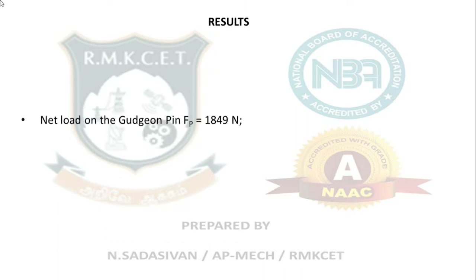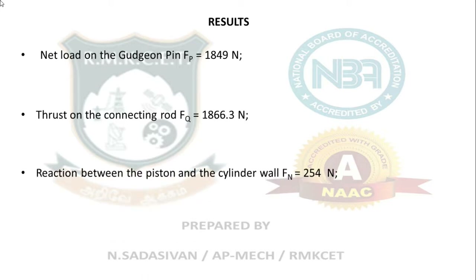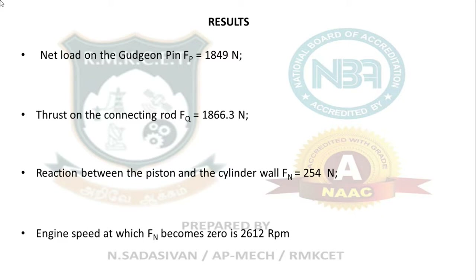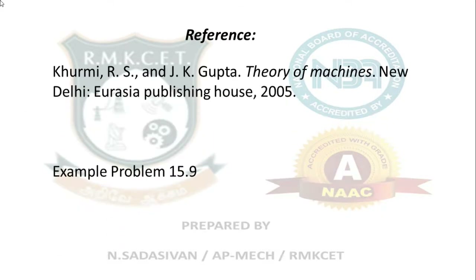Summing up results: net load on the gudgeon pin (piston effort) equals 1849 Newton; thrust on the connecting rod equals 1866.3 Newton; reaction between piston and cylinder wall equals 254 Newton; engine speed at which the reaction becomes zero is 2612 RPM. This problem is taken from the Kurumi textbook, example problem number 15.9.